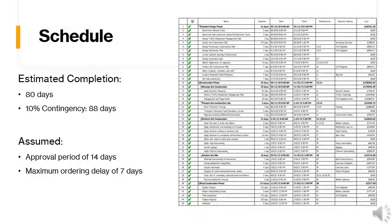Visible on the slide is the project schedule visualised on Project Libra. By scheduling the various tasks involved in the construction project, the completion date was estimated to be approximately 80 days. This duration has not yet had a contingency applied to it, and therefore the expected completion date has been determined as 88 days. Within this period, it is assumed that approval time takes a maximum of 14 days and material procurement takes a maximum of 7 days.